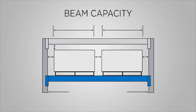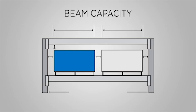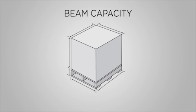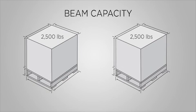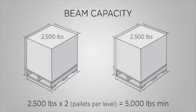The beam capacity is calculated by multiplying the weight of the pallet and load by the number of pallets per level. For example, 2 pallets with a weight of 2,500 pounds each per level would be 2,500 pounds times 2 pallets per level equals 5,000 pounds minimum beam capacity.